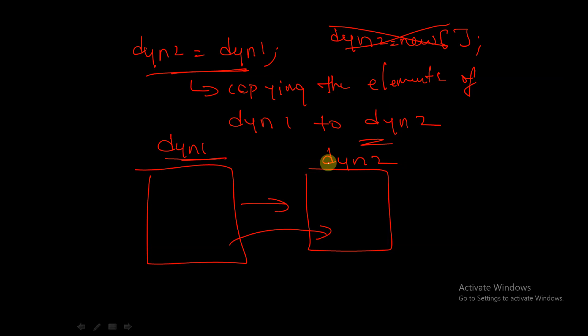This is how we copy elements from one dynamic array to another without explicitly creating memory for the second dynamic array. We can copy elements from dynamic array one to dynamic array two simply by assignment.